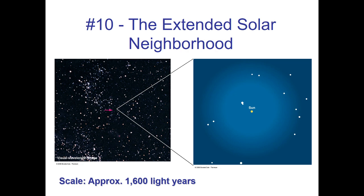We're now at 1,600 light years across — we went from 16 light years to 1,600 light years. This is the extended solar neighborhood, about 2% of our galaxy in terms of linear scale, since the galaxy is about 100,000 light years across. This is like looking at a big chunk of a city but not getting a sense of the entire city. There would be millions of stars in this distance, but no galactic structure that we can really see. Light years are still appropriate for this scale.